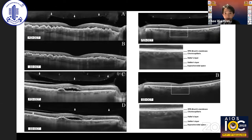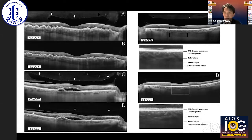These representative scans with EDI spectral domain OCT and swept source OCT show that the choroid and choroidal-scleral boundaries are well visualized with both modalities. These are the important structures we look at day-to-day for disease diagnosis and monitoring treatment response, and they can be visualized equally well with both instruments.